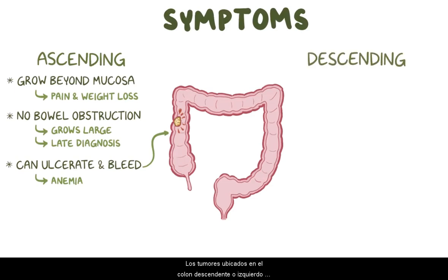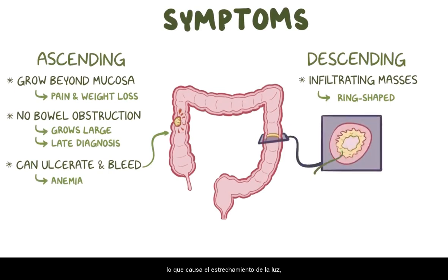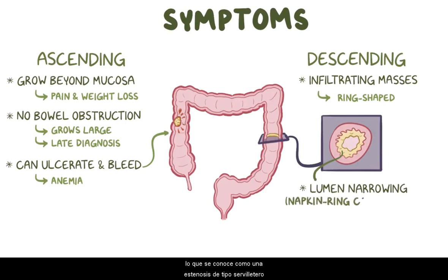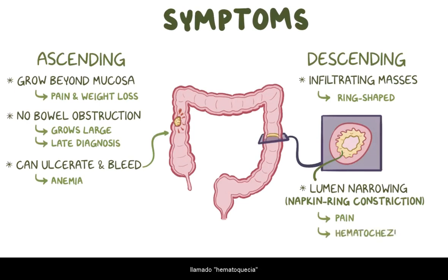Tumors located on the descending or left colon are generally infiltrating masses, meaning that they tend to be ring-shaped masses that involve the whole circumference of the colonic wall. This causes lumen narrowing, referred to as napkin ring constriction, so symptoms of bowel obstruction typically happen early on. Bowel obstruction can cause colicky abdominal pain and blood-streaked stools, called hematochezia.